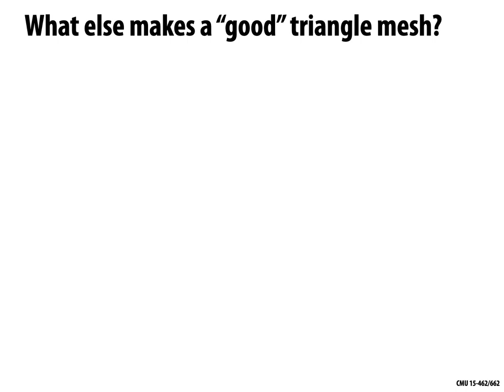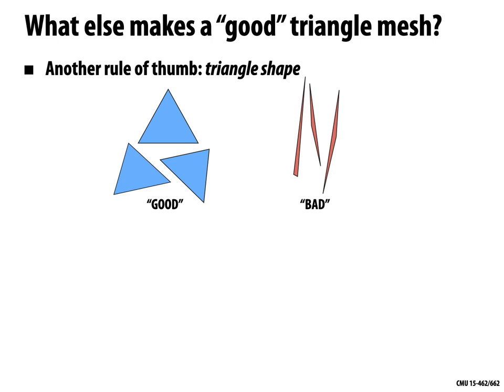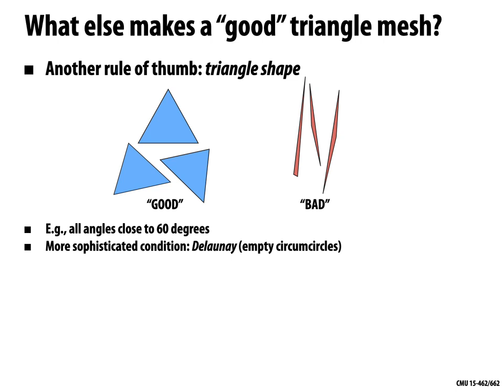What else makes a good triangle mesh? These are rules of thumb. The shape of triangles can be very important for different applications. For numerical simulation, we want triangles more like the equilateral ones on the left and less like the long skinny sliver triangles on the right. Meshes with long skinny sliver triangles cause nasty problems, whereas meshes with nice fat round triangles generally do the right thing. One goal: all angles should be as close to 60 degrees as possible.